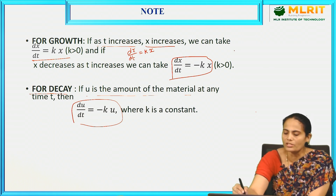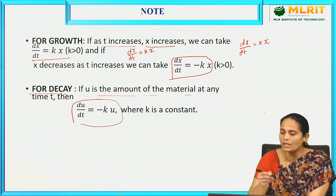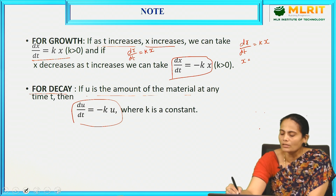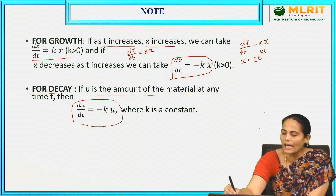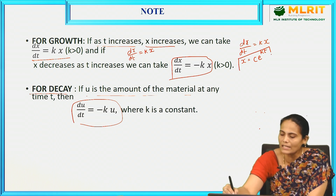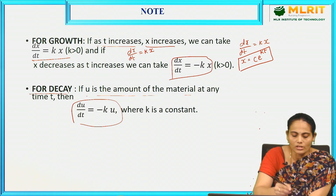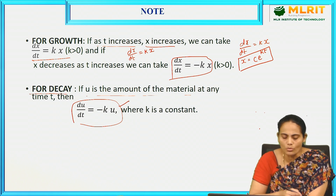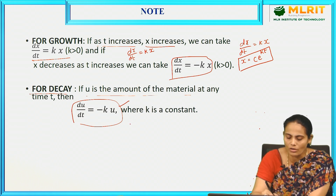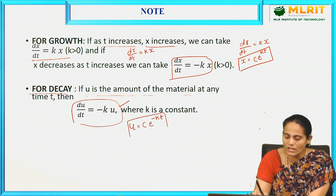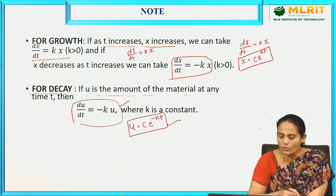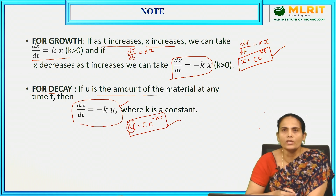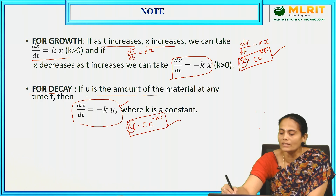After solving these first order first degree differential equations using the variable separable method and integrating, for growth we get x = c·e^(kt). For decay, du/dt = −ku gives u = c·e^(−kt). These equations give u or x when the time is given.